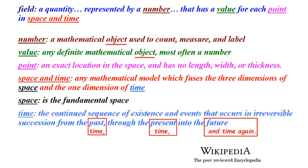A field is a quantity represented by a number that has a value for each point in space and time. Breaking down the keywords: number is a mathematical concept, not an object; value is an indefinite mathematical concept; point is an exact location in space; space-time is any mathematical model which fuses the three dimensions of space and time. Space is the fundamental space. Time is the continued sequence of existence and events that occurs in irreversible succession from past through present into future. And they've even reversed the irreversibility of time — just put a negative sign in front and you have reversible time. In math, it's the world of wonders: you can do anything.